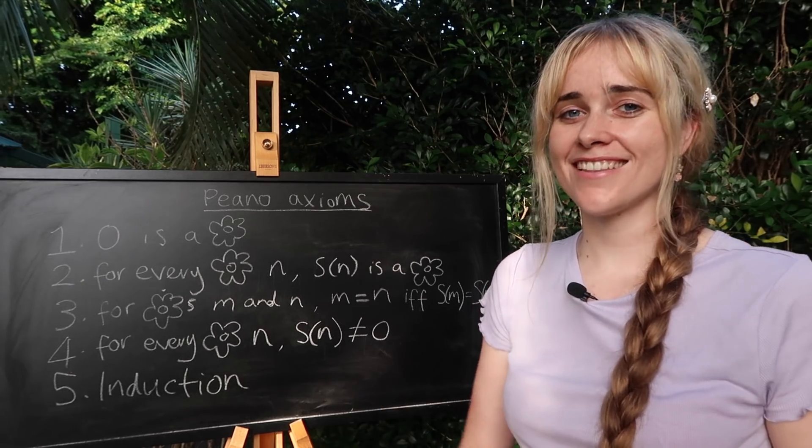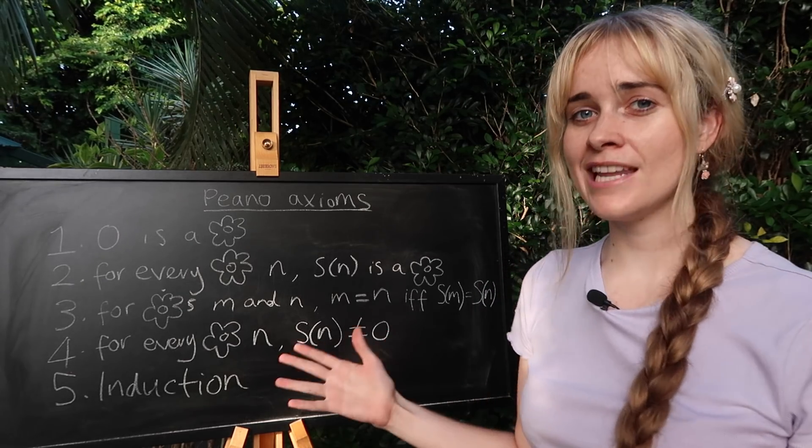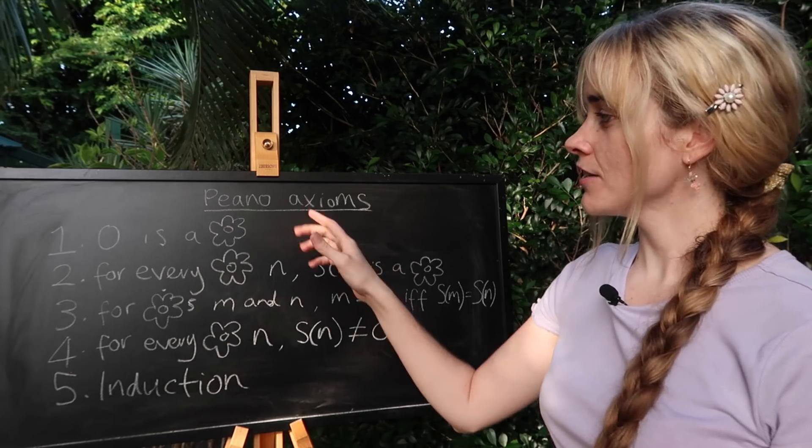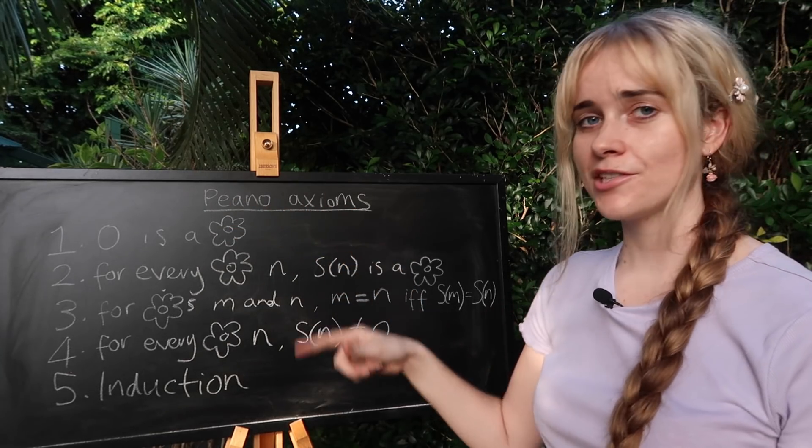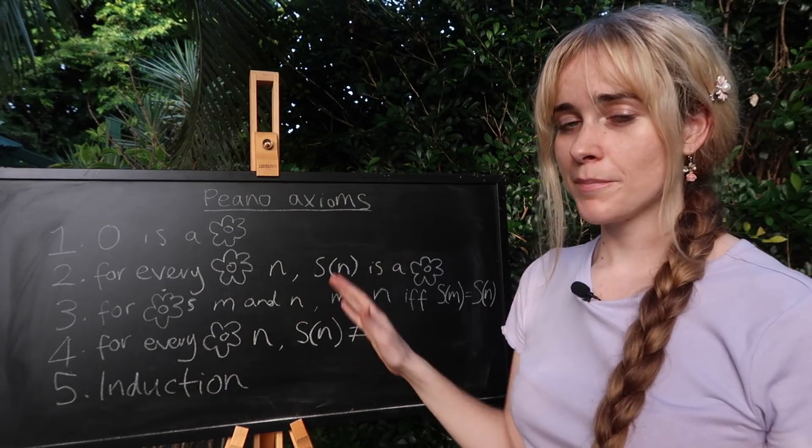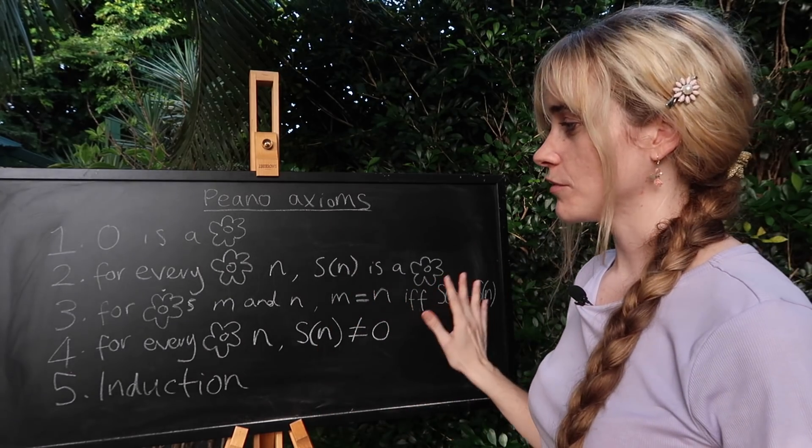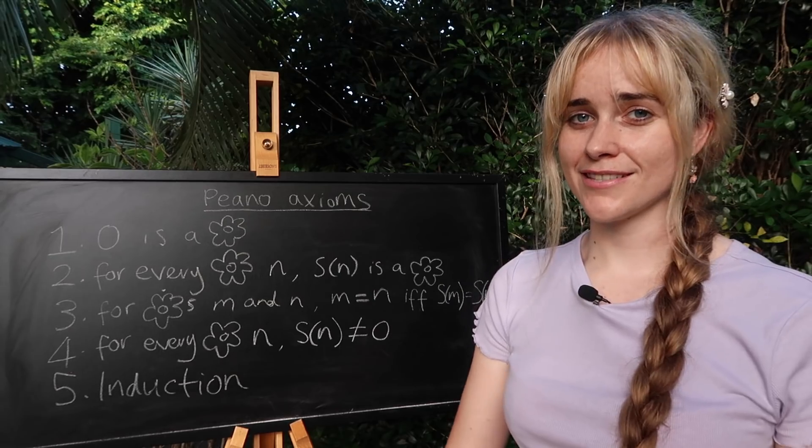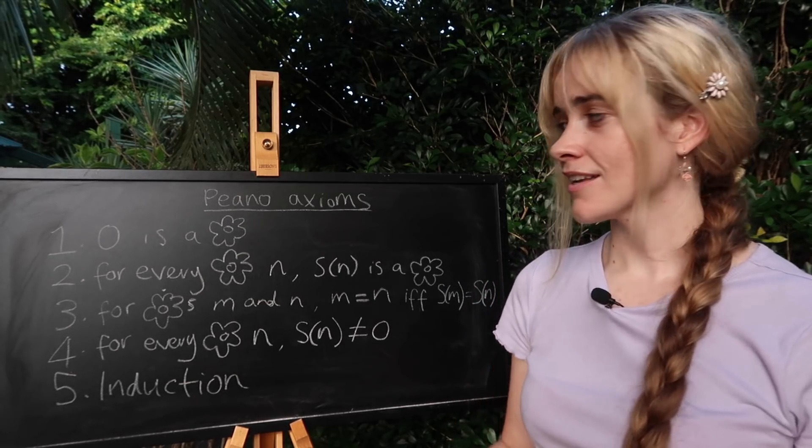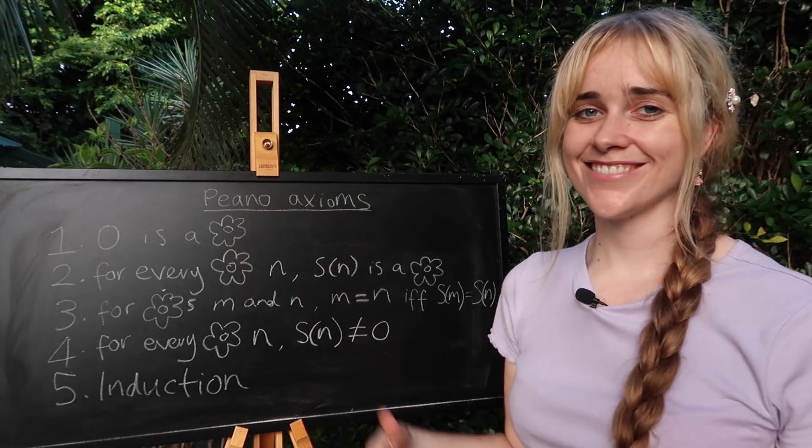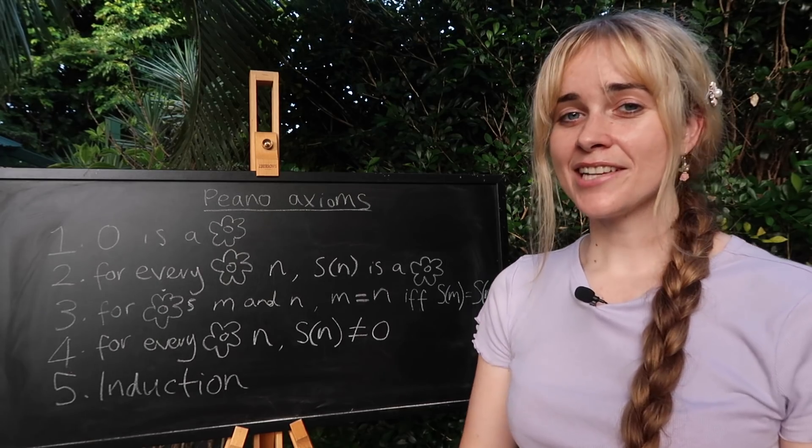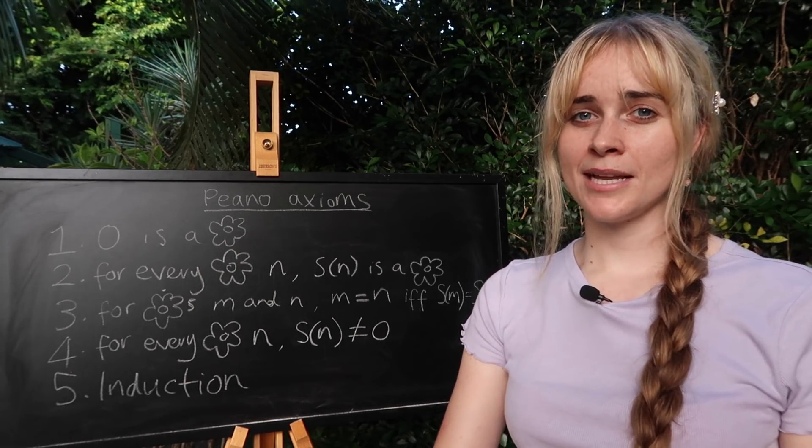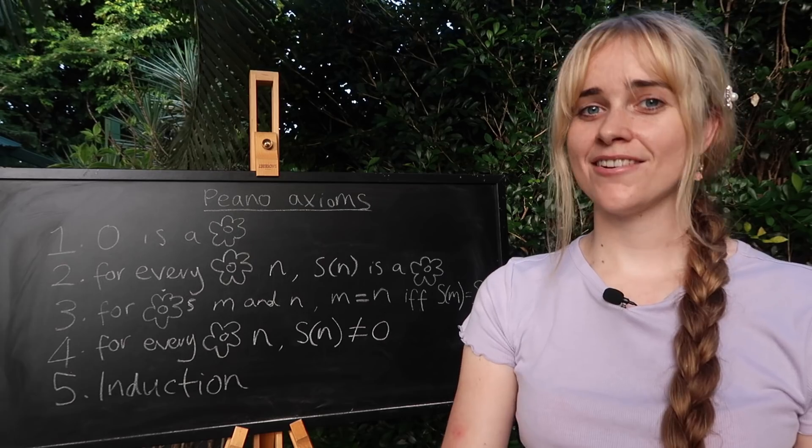And again numbers are something you might think you're familiar with but we really want to be precise. We're going to use the Peano axioms which I mentioned earlier. And for the purpose of writing on this chalkboard here I have replaced a word you might have heard of which is the phrase natural number with a little flower. The natural numbers are just the numbers that you would count things with, zero, one, two, three, four, five and onwards.